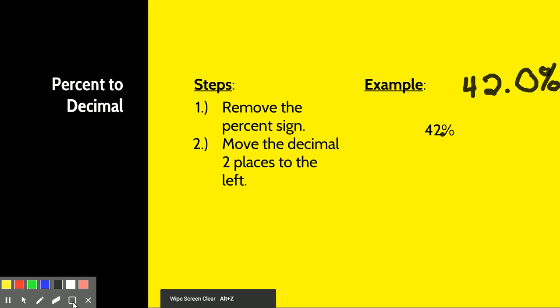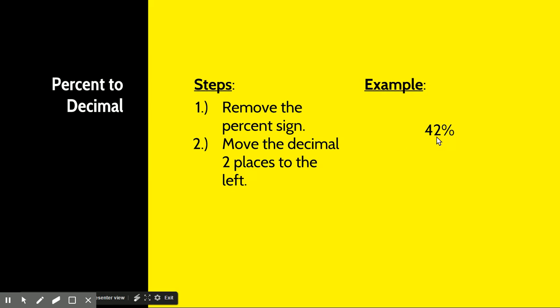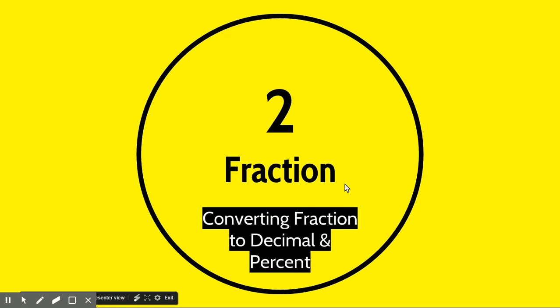So if you don't see a decimal already there, then you know the decimal is right next to that percentage. And then from there it just says that you should move the decimal two places to the left. So you start here, and you move over one, and twice, and you get .42.